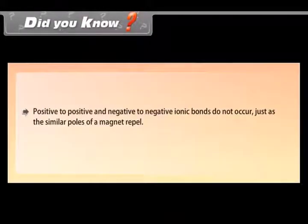Did you know? Positive to positive and negative to negative ionic bonds do not occur just as the similar poles of a magnet repel.